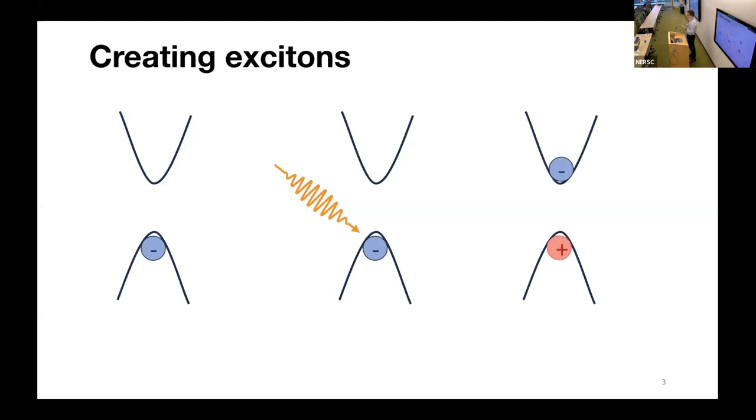This leaves behind a hole in the valence band, or the absence of an electron. From regular electrostatics, a positive charge and a negative charge tend to attract each other, and so this electron-hole pair can form a bound state known as an exciton.